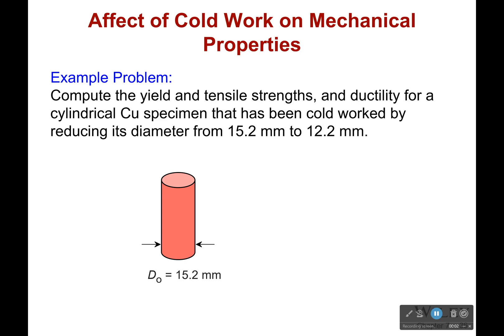Let's work on an example problem with cold work. It says compute the yield and tensile strengths and ductility for a cylindrical copper specimen that's been cold worked by reducing its diameter from 15.2 millimeters to 12.2 millimeters.